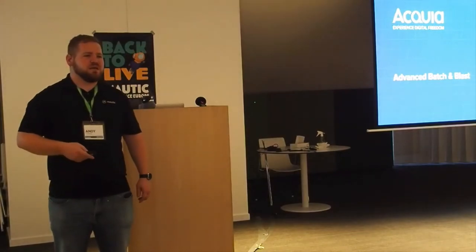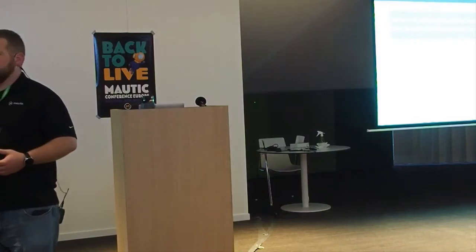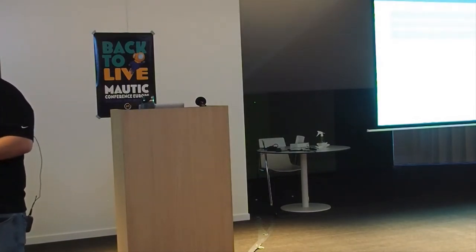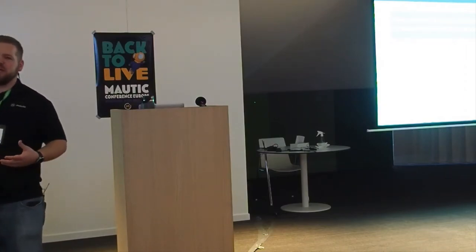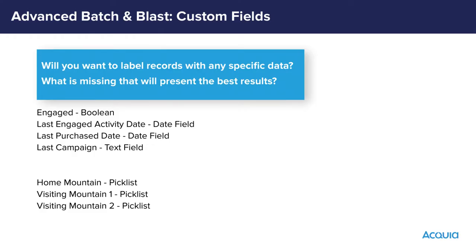Then we get into more advanced personalized emails — campaigns, and a lot of what was just talked about. Personalization really does increase engagement. 98% of marketers have said that when they send personalized messages, they get much better engagement and better results. This is a study that Acquia conducted within the last year. So when you're starting to think about personalization, you want to think about what data you either have or want to collect about a contact.